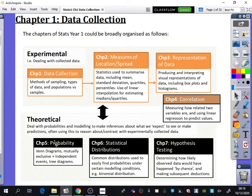The second half of statistics is theoretical statistics, which deals with probabilities and modeling to make inferences or predictions about what we expect to see. We often use this to reason about or contrast with experimentally collected data.